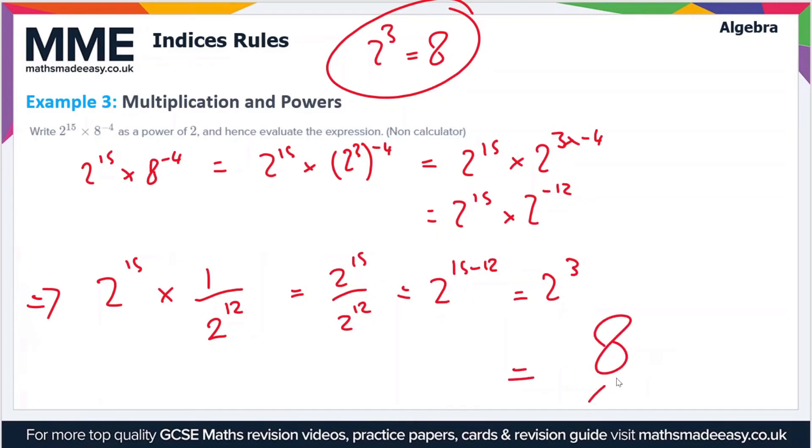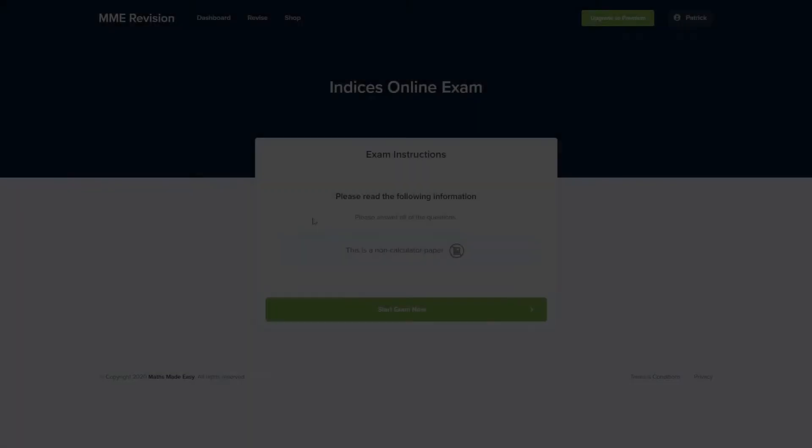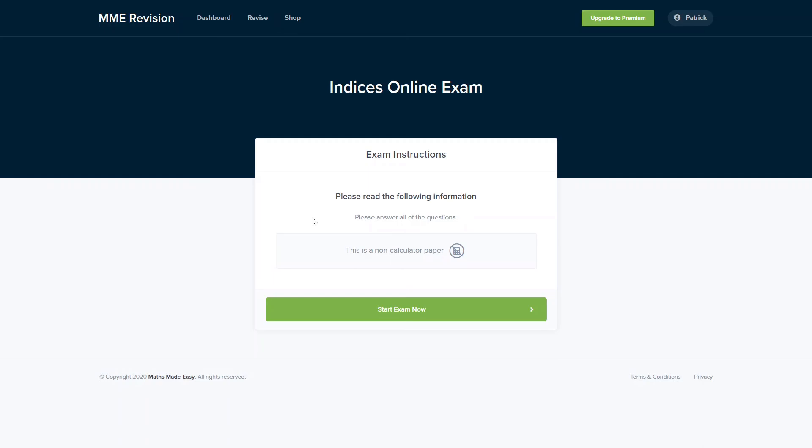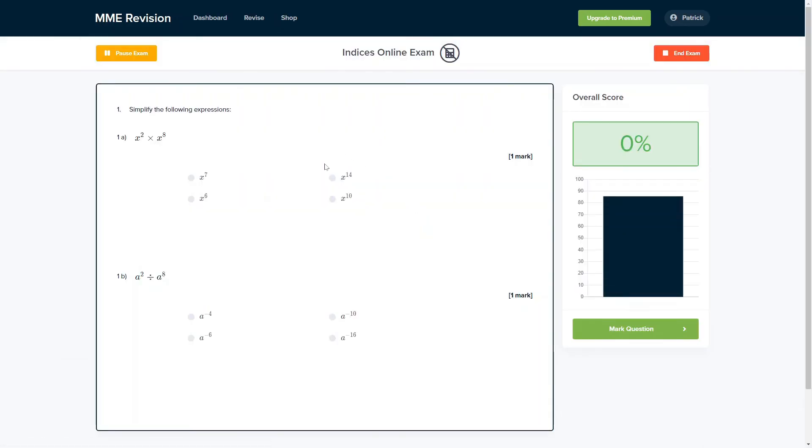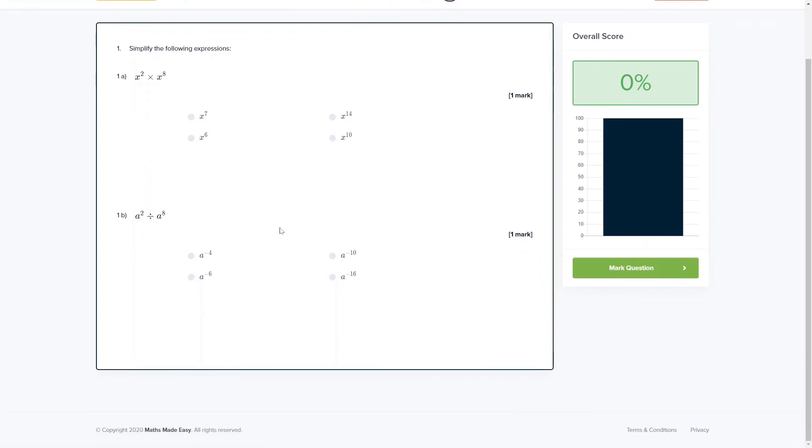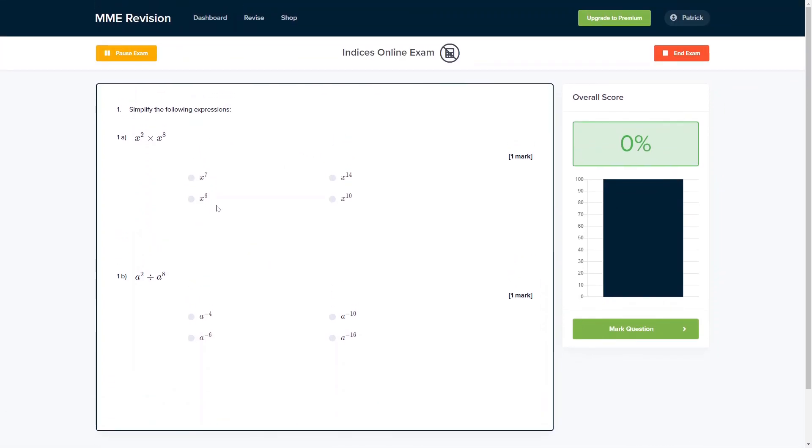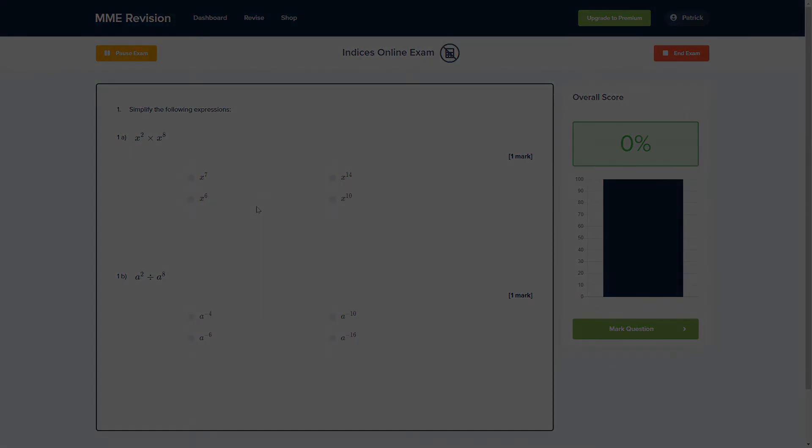So our expression is equal to 8. If you're feeling ready to get some practice in, you can do so with our online exam. This is available through our revision platform, and if you take the test you'll find loads of different questions to have a go at, all of which are instantly marked, so you get feedback straight away. This allows you to work out where you're going wrong and where you can improve. If you're interested, you can click the link below and it'll take you straight over there.